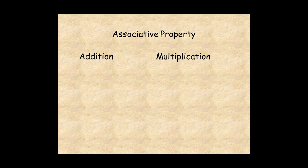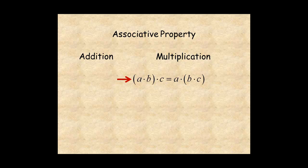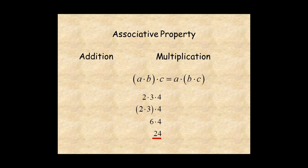For the associative property of multiplication, when you multiply three numbers, the order of multiplication doesn't matter. For example, to multiply two times three times four, you could multiply two times three and then multiply by four for twenty-four. Or, you could multiply three times four and then times two for twenty-four.